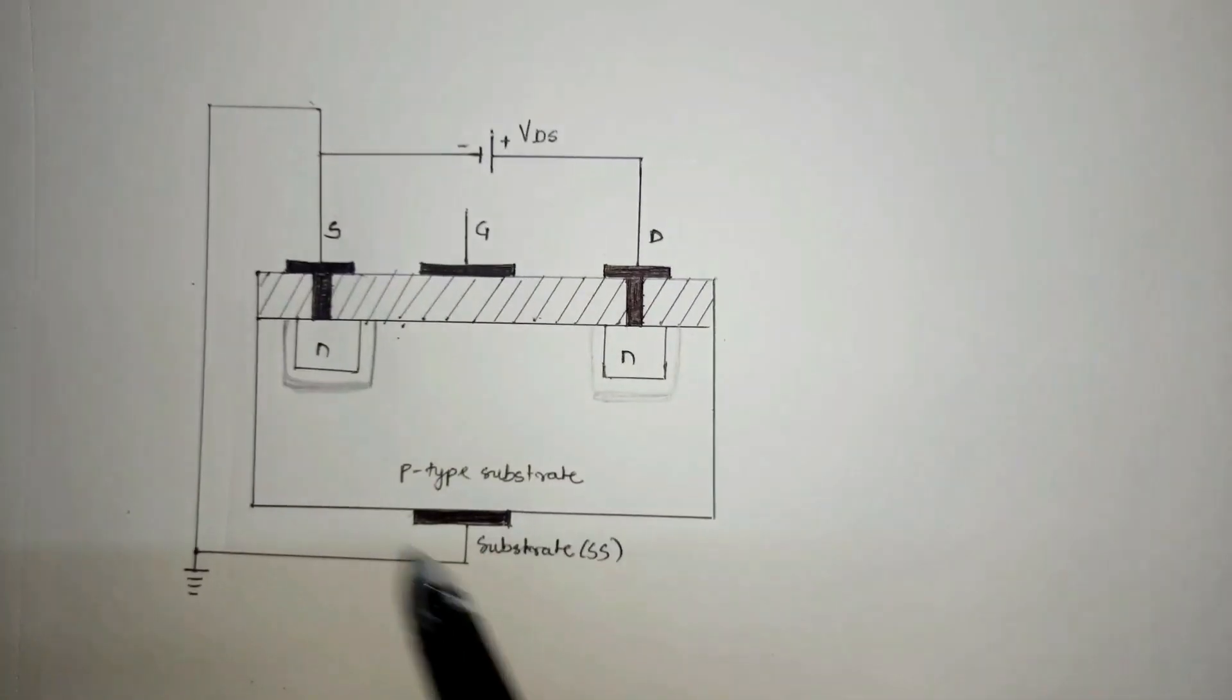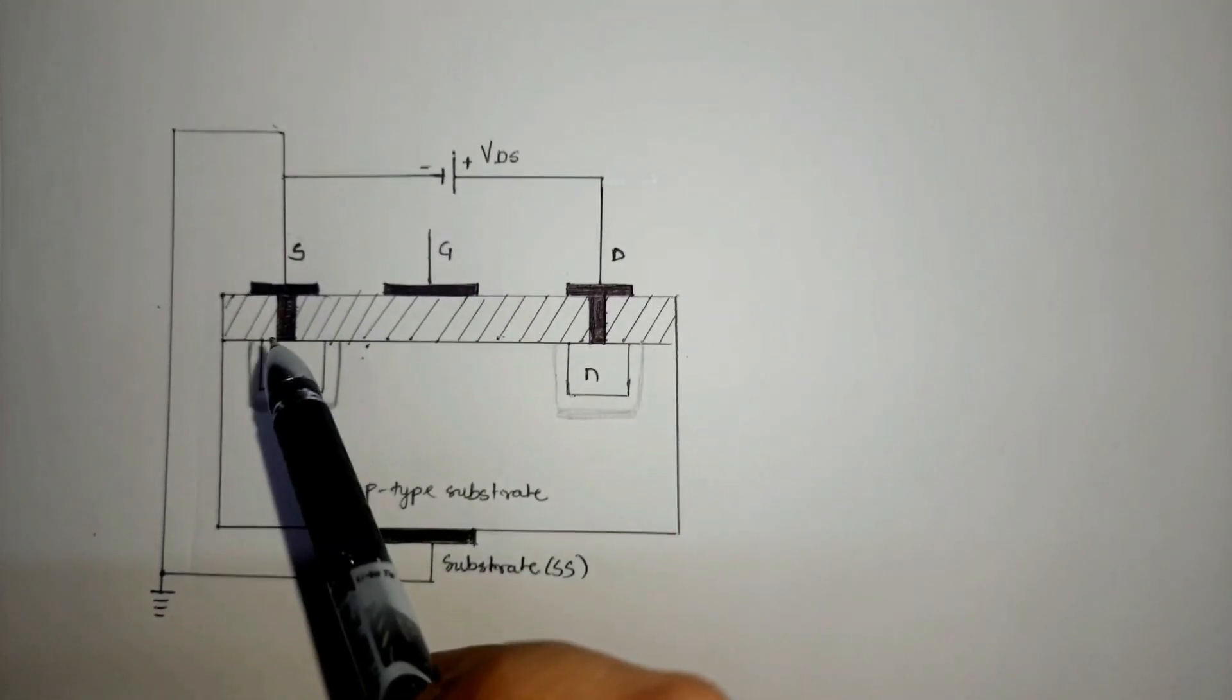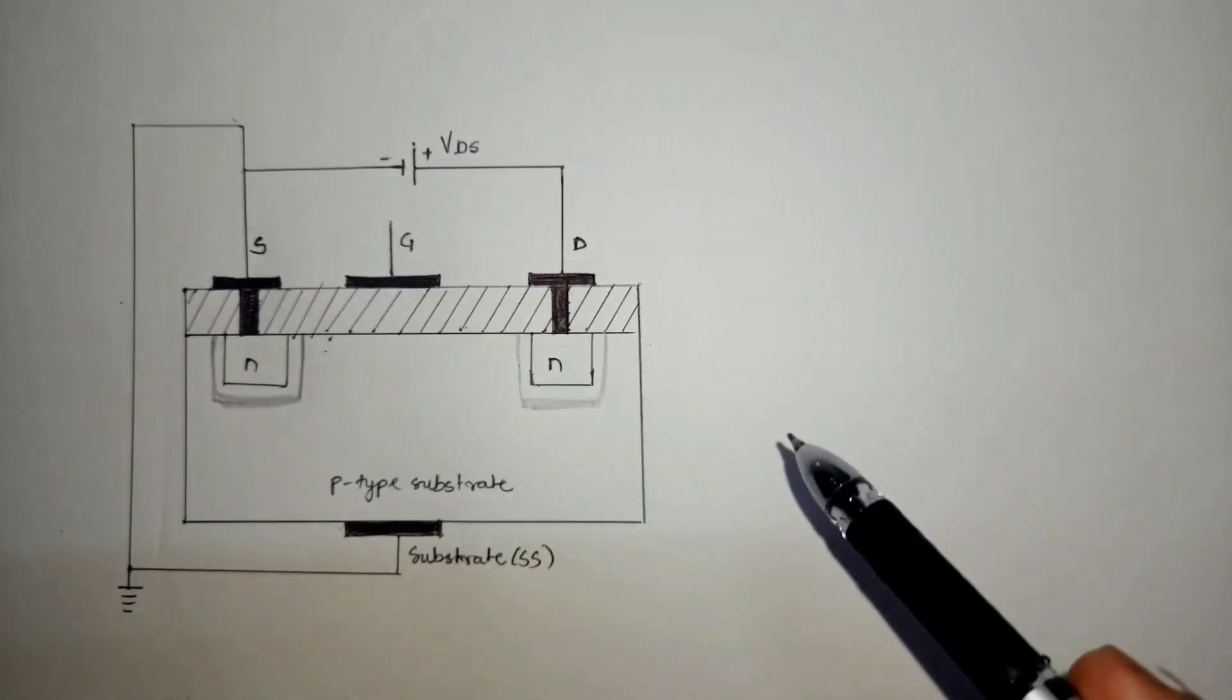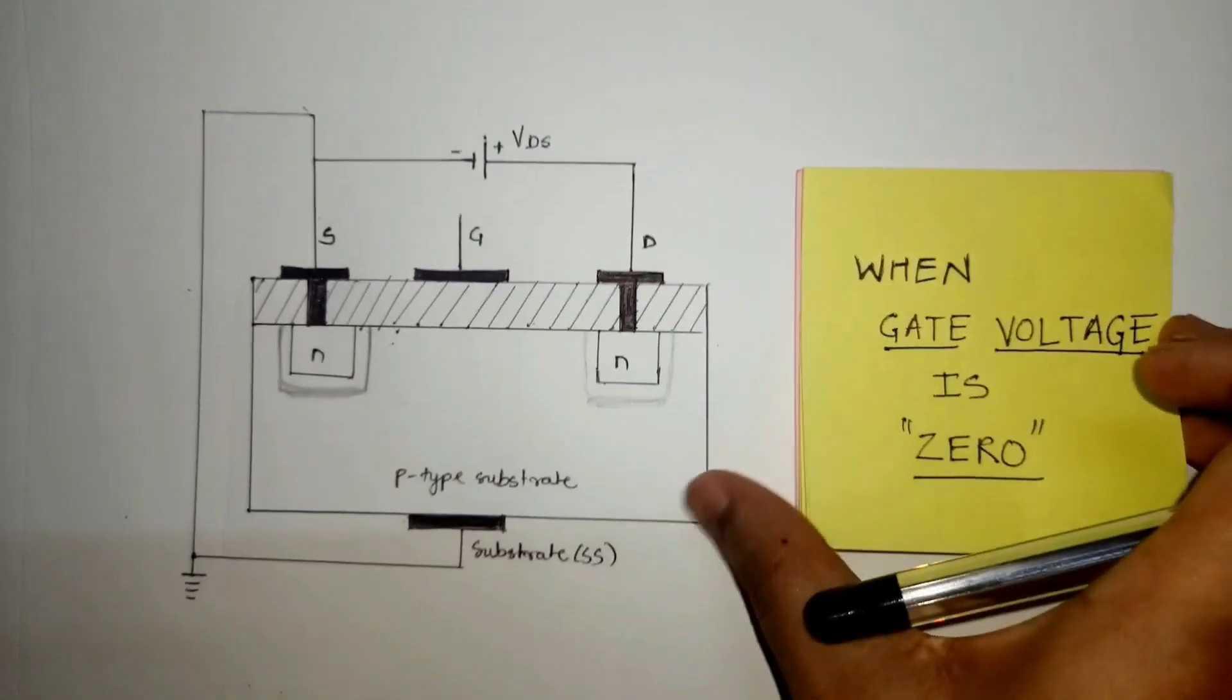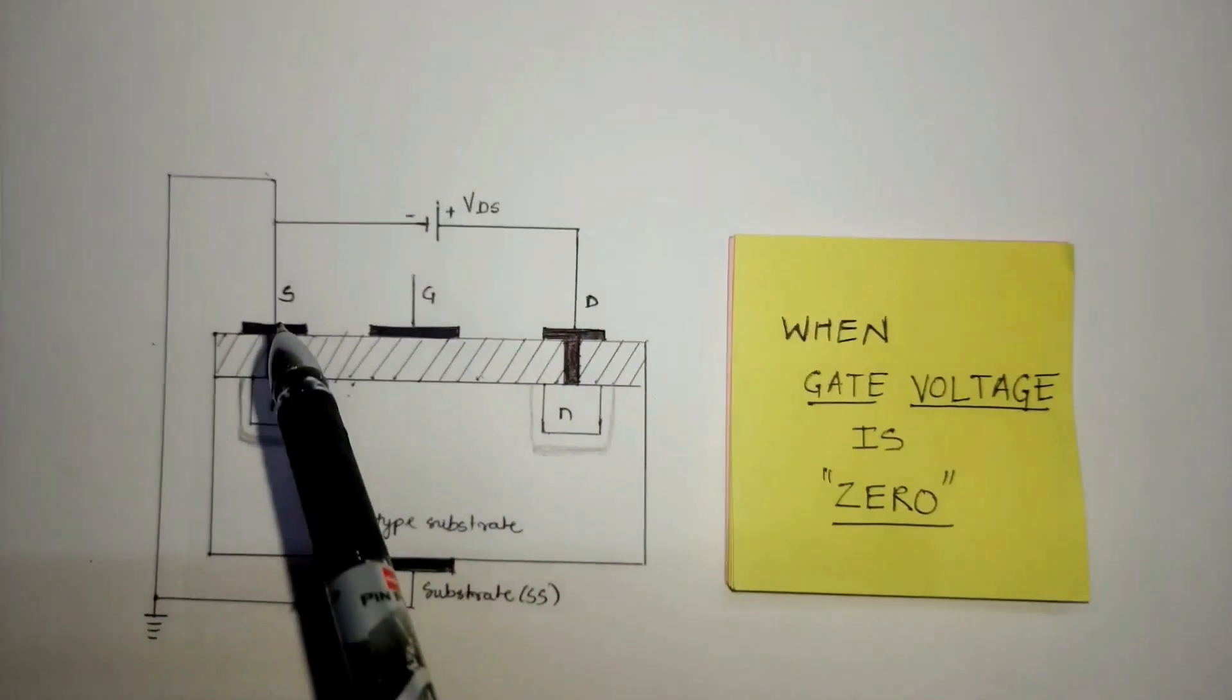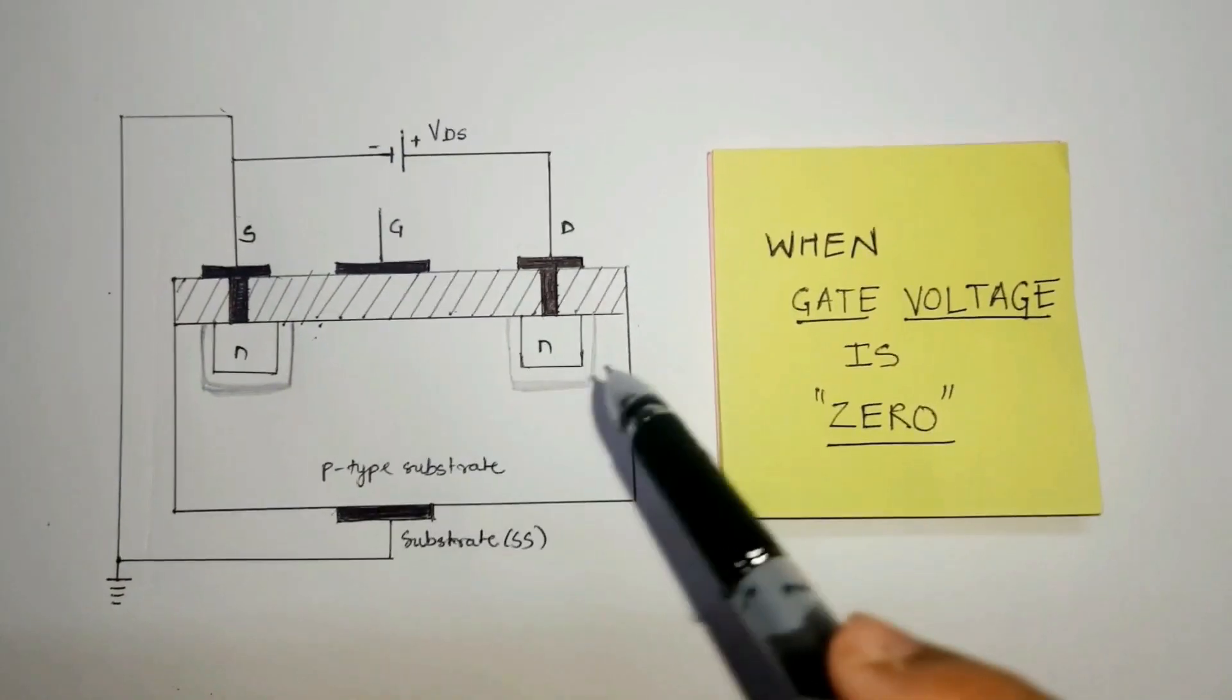This is an N-channel enhancement MOSFET. The source and substrate terminal is connected to ground. As you can see here, there is a region which is formed between N and P-doped region, called the depletion region. It is a region where there are no free charge carriers. Now, let's start with the first part of working where the gate voltage is zero. We have not applied any voltage at the gate terminal. We have applied a positive voltage between the source and the drain terminal, and there is no way that the drain current could flow from source to drain.